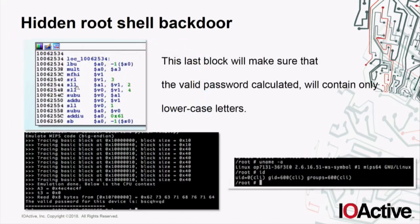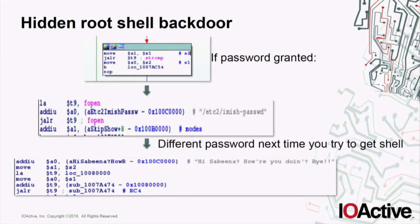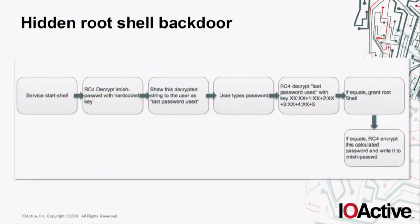Finally, it executes other instructions that I also emulated with Unicorn — these make sure the result is only lowercase letters. After the emulation, for my device's MAC address, this is the valid password, which is only lowercase letters, and then you can finally access the root shell. In the code, after the password is granted, it opens the imis_password file again and RC4-encrypts with the same key the password that the user typed. This means the next time you execute the 'service start shell' command, the password will be different — that's why I call this a dynamic password, and you'll have to recalculate it each time.